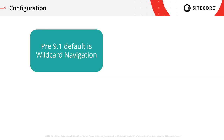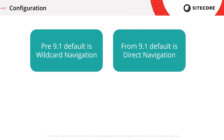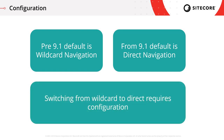The final piece of configuration information I want to leave you with is around which navigation approach is set up by default. Prior to Sitecore Experience Commerce 9.1, any new commerce sites that were created would be created with wildcard navigation enabled. However, from Sitecore Experience Commerce 9.1 onwards, that's changed — any new sites that get created will now use direct navigation by default. A key thing to remember is that if you have an existing site that uses wildcard navigation and you would like to switch it over to direct navigation, there is some configuration required to set up the layouts used by the catalog items. The steps for this are detailed on our documentation site, and the link is included in the description below.